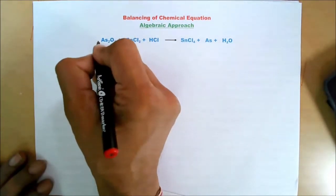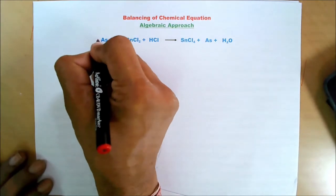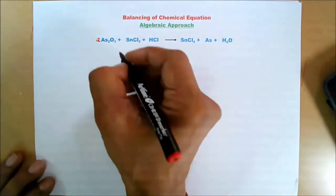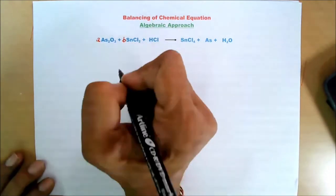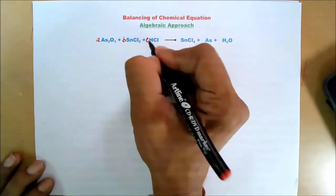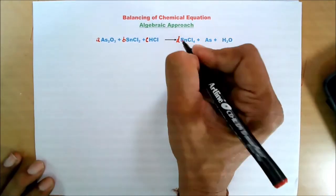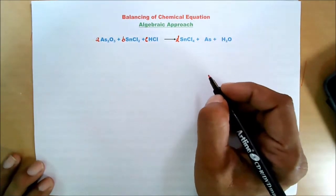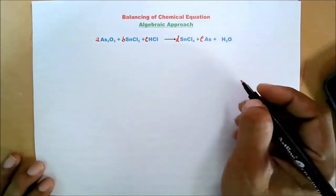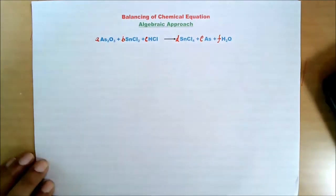I shall write either A, B, C, D or X, Y, Z as you like. So I shall write A before arsenic trioxide, then B before stannous chloride, C before hydrochloric acid, D before stannic chloride, E before elemental arsenic, and F before water.